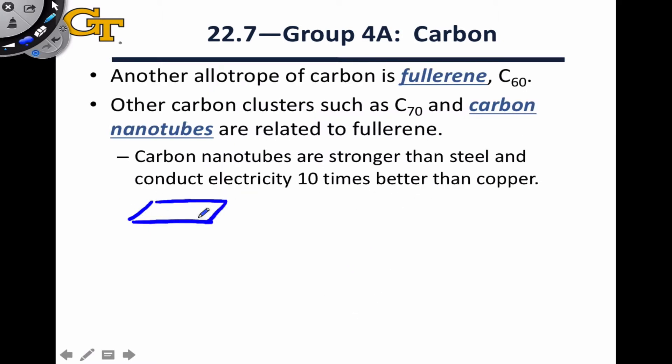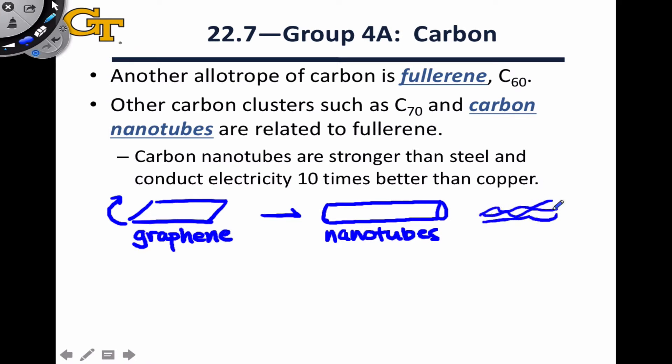A single sheet of graphite is known as graphene, and we can take that sheet and curl it around on itself to form a tube-like structure. These structures are known as carbon nanotubes, and they have applications related to their fibrous nature, forming very strong fibers that can be included in a variety of materials. Interestingly, the carbons within carbon nanotubes are still formally sp2 hybridized with one double bond and two single bonds, but they're no longer planar.